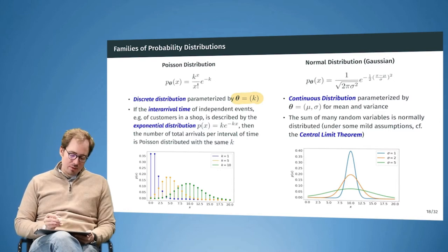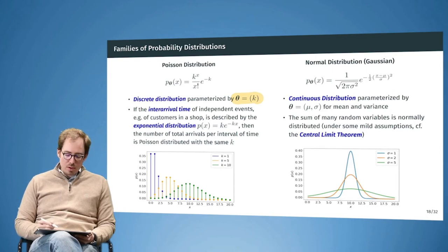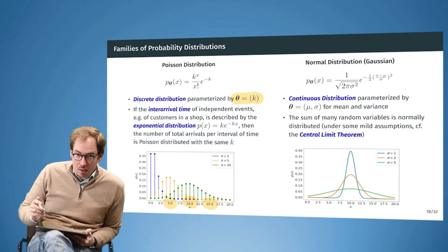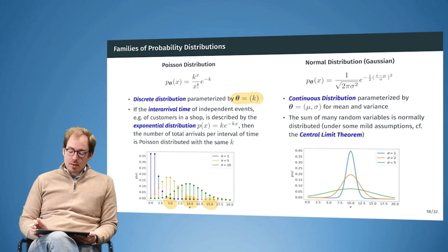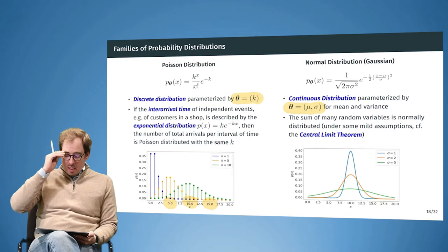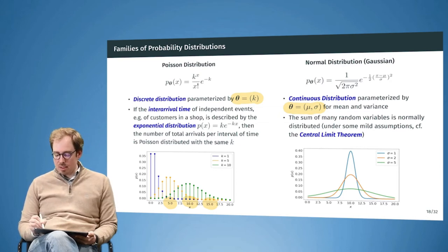For example, if k equals 10 in the case of the shop, it would be very likely that 10 customers arrive within the hour, but with smaller probability it could be 15 or 5 customers. On the right-hand side, the Gaussian distribution has two parameters: mu and sigma, representing the mean and the standard deviation. The variance would be sigma squared.